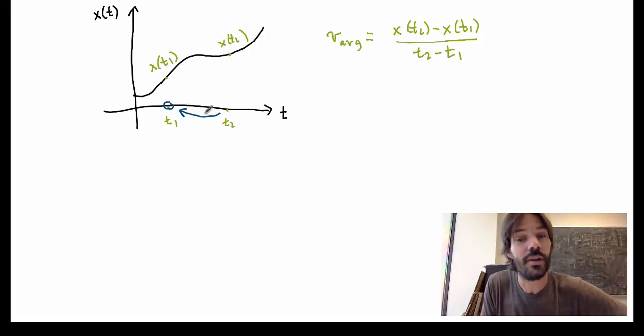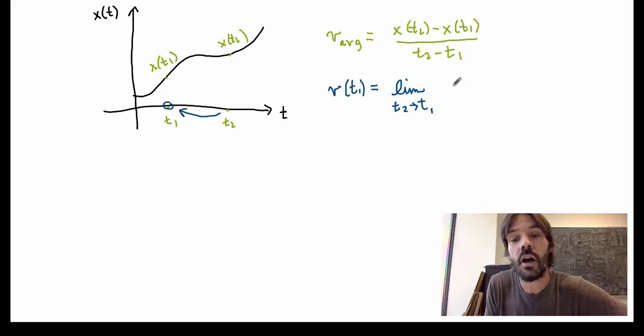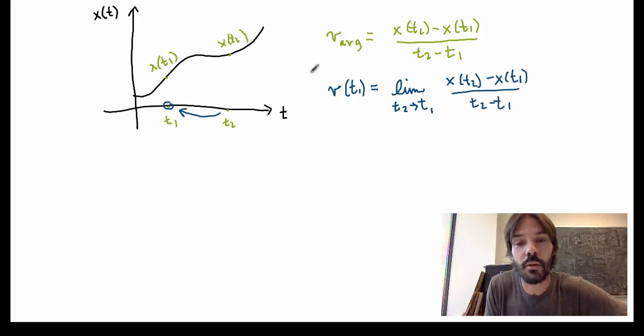Anyway, so that's what we do. And the actual way that we define this mathematically is in terms of a limit process. So we write that we take the limit as t2 goes to t1 of the velocity or the average velocity over this time interval. This is how we define the instantaneous velocity, which is exactly what the policeman was talking about.